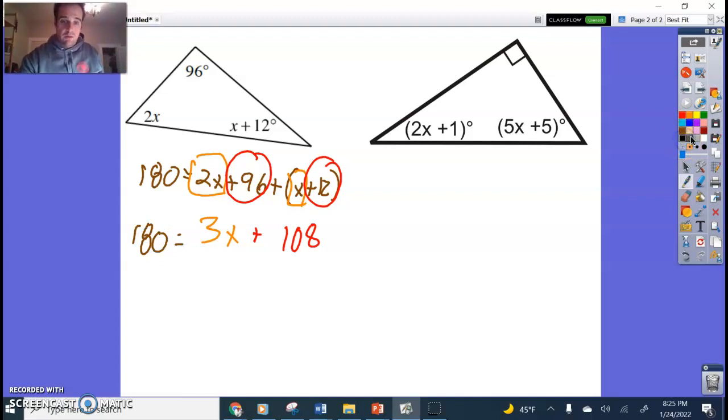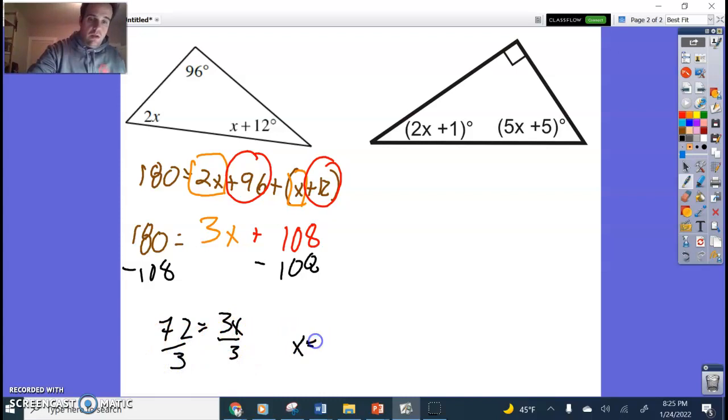Now I'm going to go ahead and solve a two-step equation. Minus 108, minus 108. That gives me 72, which equals 3X. Now I'll just go ahead and divide by 3. X should equal 24, if my math is right, which I believe it is. X would not be 24 degrees. Just 24.